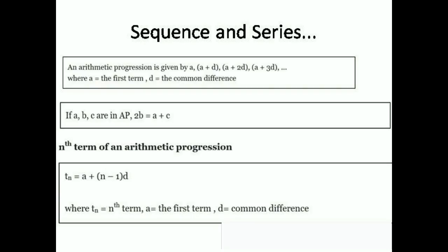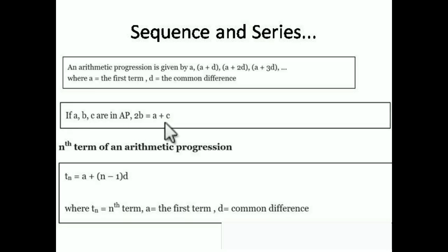Arithmetic Progression is given by: a, a+d, a+2d, a+3d, where a is the first term and d is the common difference. If a, b, c are in AP, then 2b = a + c. This comes from the fact that the difference between any two consecutive numbers must be the same — so b minus a equals c minus b, which gives 2b = a + c.